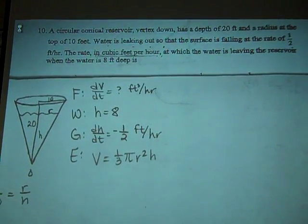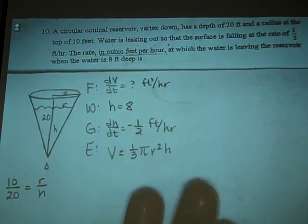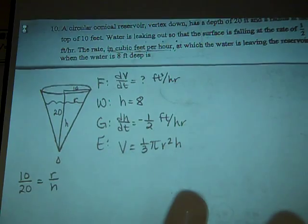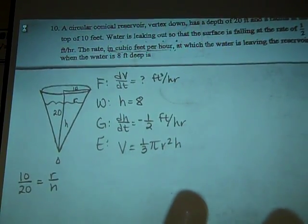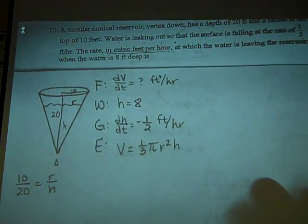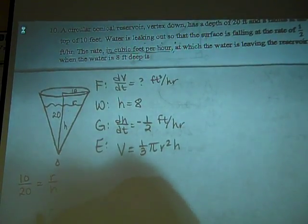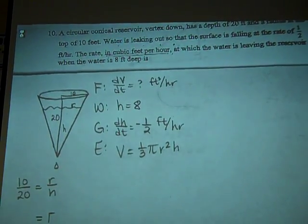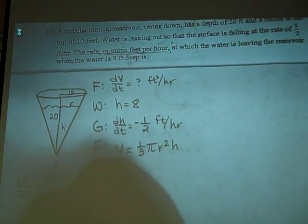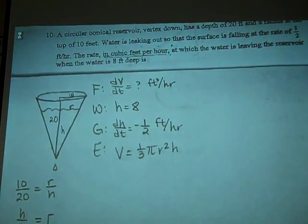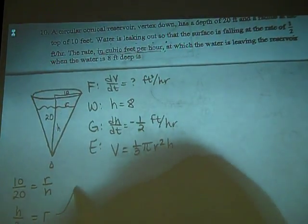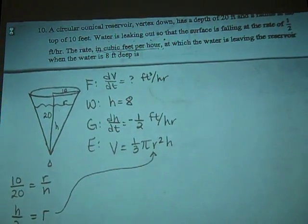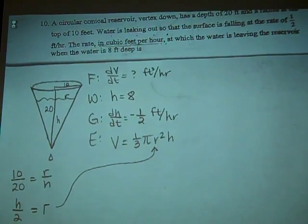Now, in this little expression that I have here, do I want to isolate R or H? I'm trying to get rid of R, so I need to isolate R. You want to isolate what you're trying to get rid of. So if I get R by itself by multiplying the H over, what will I have? I will have 1 half H, which I'm just going to write as H over 2. Before we take our derivative, before we do any calculus, we are going to replace R with H over 2.